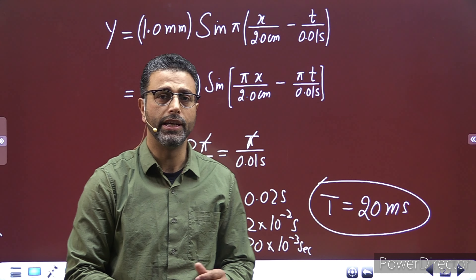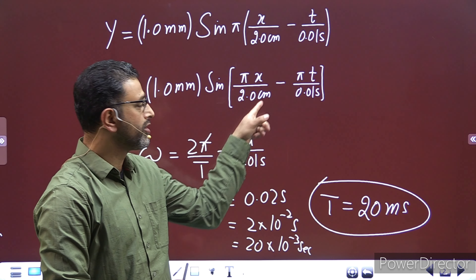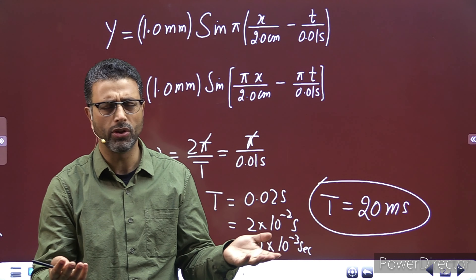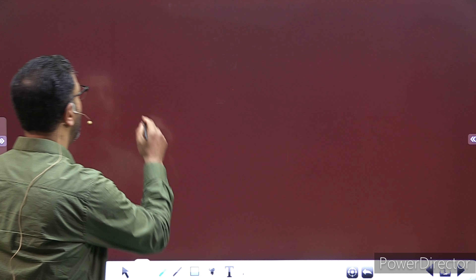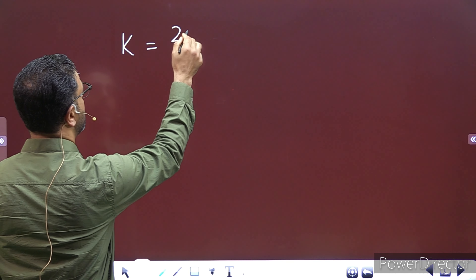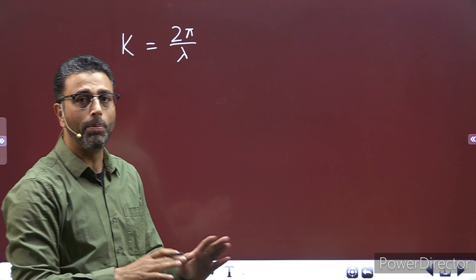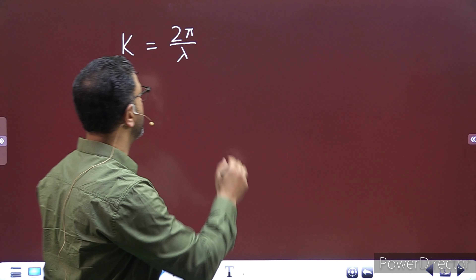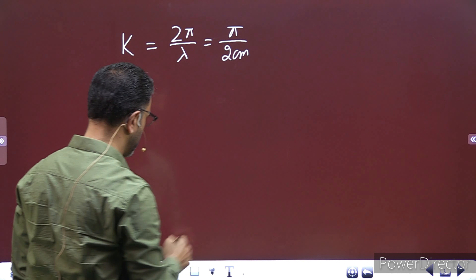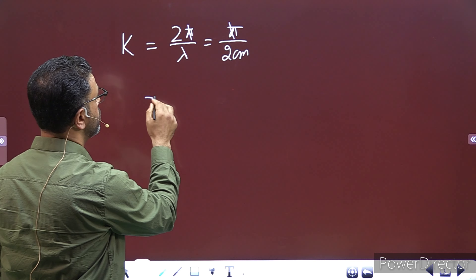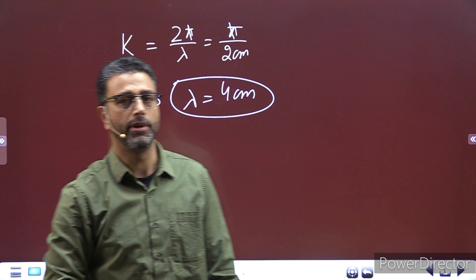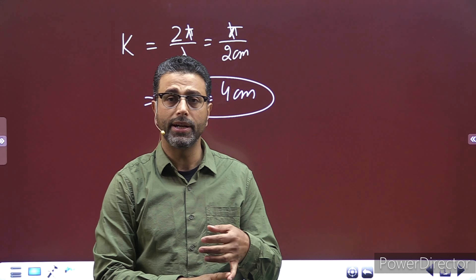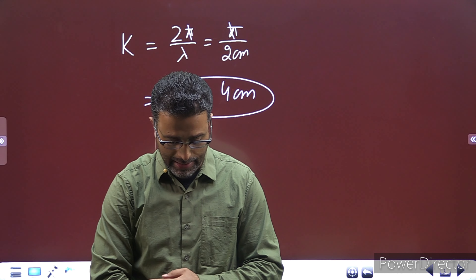Next में हमें wavelength निकालनी है। x का जो coefficient होता है that is the angular wave number, k, जो होता है 2π divided by λ। x का coefficient यहाँ पर pi divided by 2 centimeters है। Pi and pi cancels out, so λ = 4 centimeters। So time period 20 milliseconds, wavelength 4 centimeters।